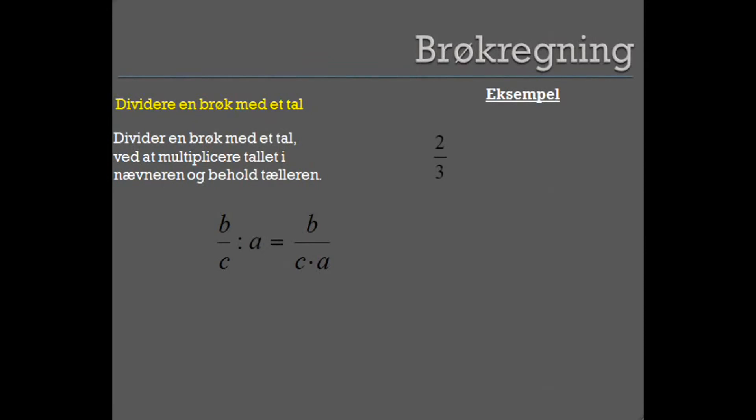Vi har brøken 2 over 3, som vi dividerer med 4. Ifølge vores regel skal vi gange 4 i nævneren og beholde telleren. Gør vi det, får vi altså en teller på 2 og en nævner på 3 gange 4, som er det samme som 2 over 12. Og det kan vi yderligere forkorte ned til 1 over 6.